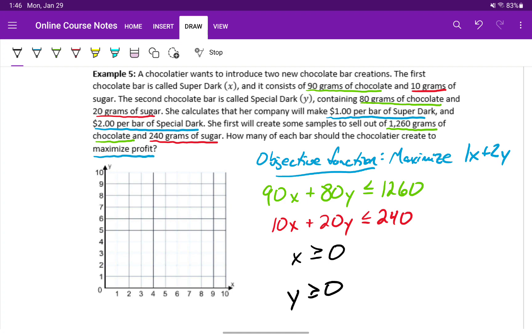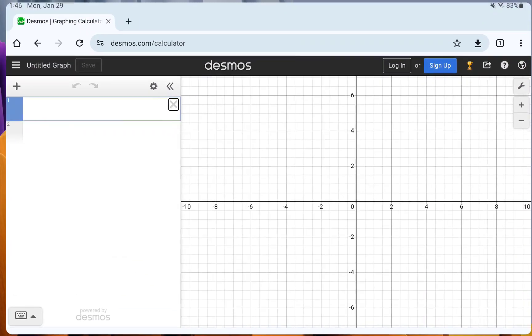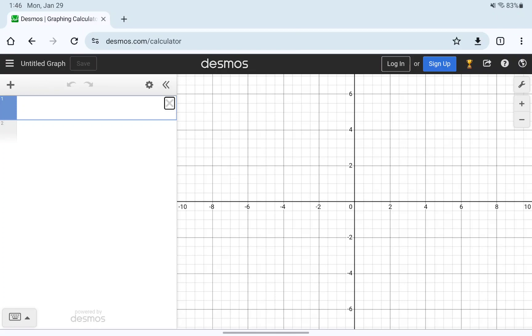We've identified our objective function. We have our system of inequalities. Now we can plot these to come up with those corner points.